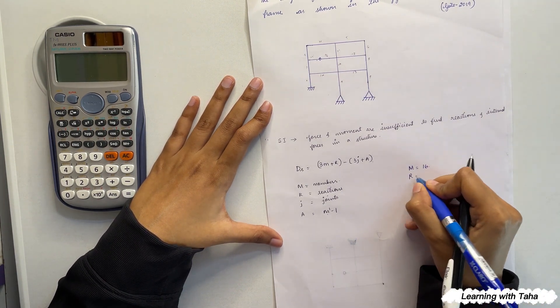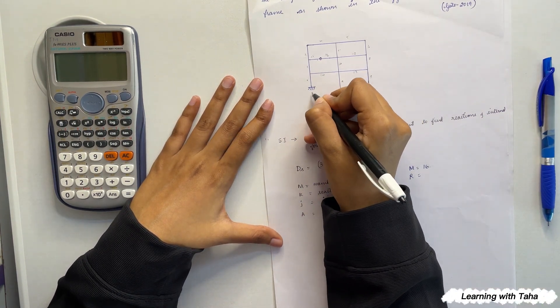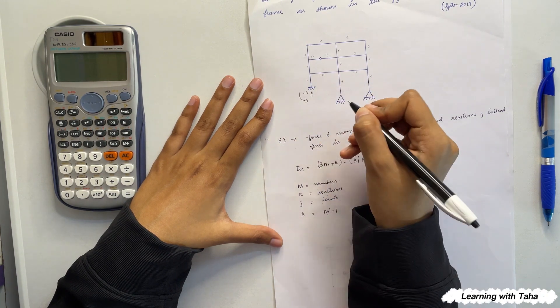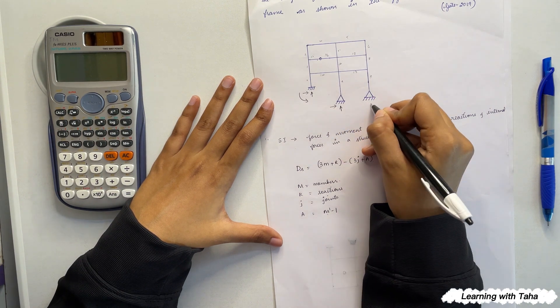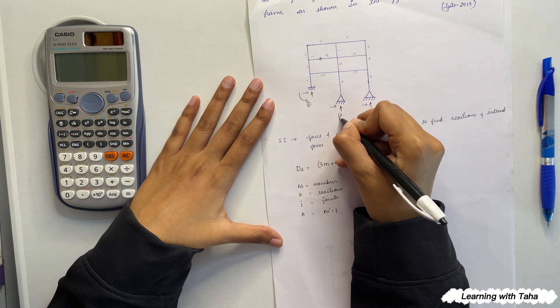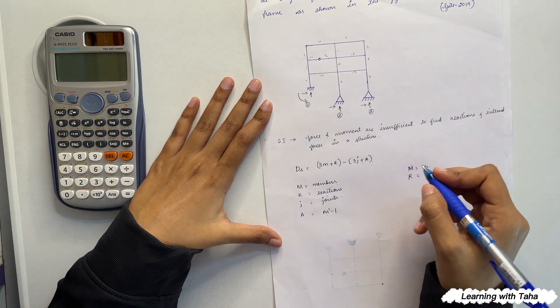Next, what are the reactions? So for a fixed support we know there will be three reactions: horizontal, vertical, and a moment. For hinged support there are two reactions: vertical and horizontal. So here are three, two, and two. So the total number of reactions are seven.